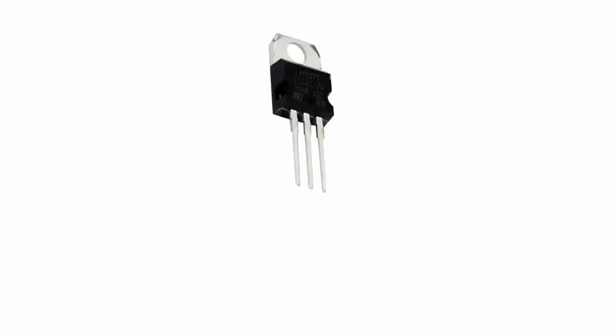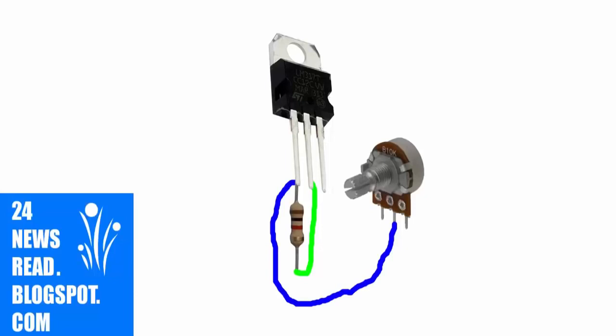First we set up our IC. The resistor connects to pins 1 and 2 of the IC. Now connect the volume potentiometer from pin 2 to pin 1 of the IC.